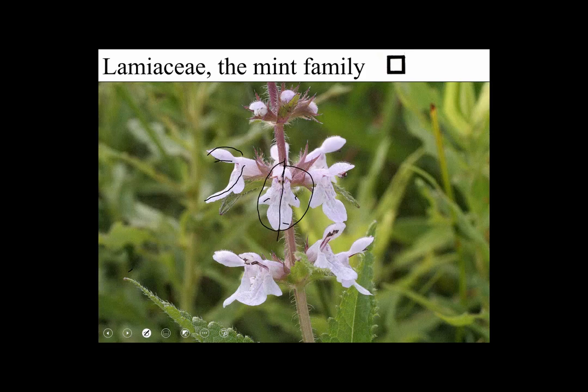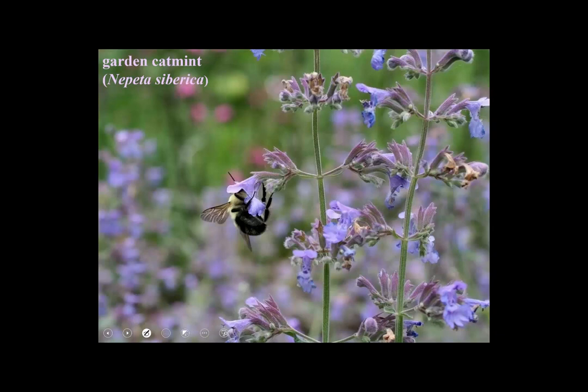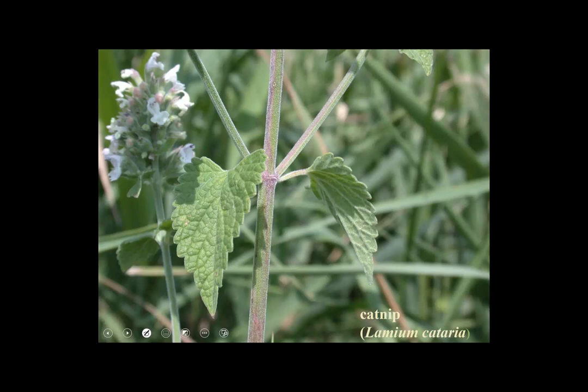What also distinguishes the mint family is square stems and opposite leaves. Here's a picture of a garden flower that's a type of catnip, and it very well illustrates the features of the mint family. We see the bilabiate corolla and a visiting insect encouraged to orient itself in a way that's conducive to transferring pollen. We can also make out the square stems — you can see some angles — and the leaves are also opposite.